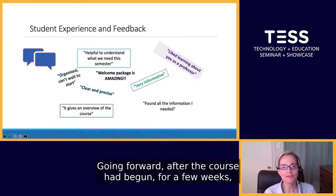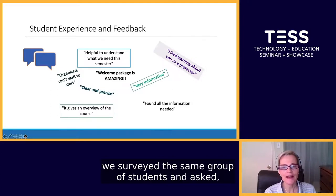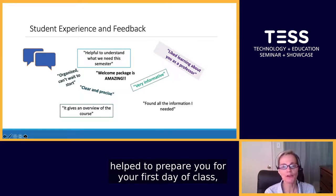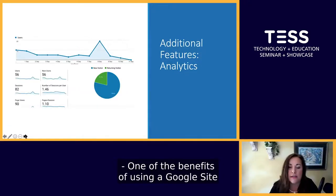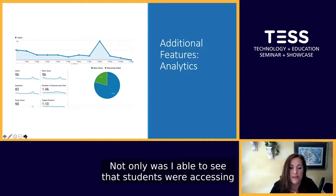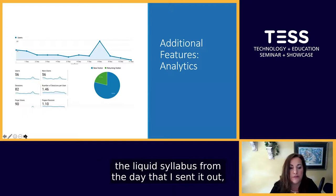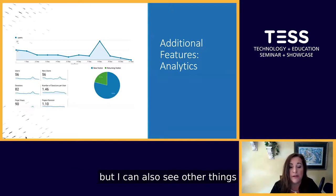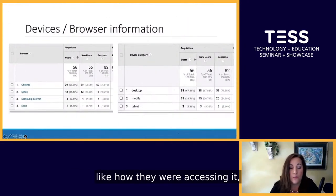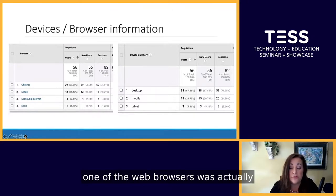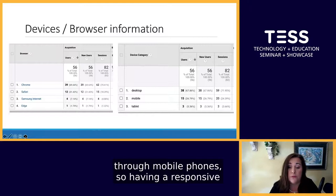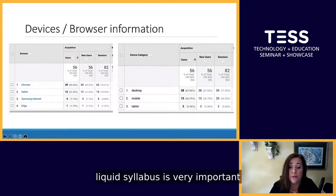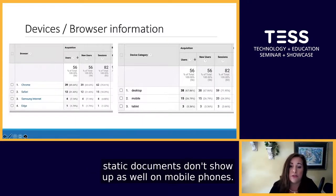Going forward, after the course had begun for a few weeks, we surveyed the same group of students and asked whether the liquid syllabus helped prepare them for their first day of class. The feedback was quite positive and reinforcing. One of the benefits of using a Google site is the analytics it can provide. I was able to see that students were accessing the liquid syllabus from the day I sent it out — a week before class started — including how they accessed it and what web browsers they were using. On the left side, one browser was from a mobile phone, and on the right side, almost 27% accessed it through a mobile phone. Having a responsive liquid syllabus is very important because static documents don't show up as well on mobile phones.